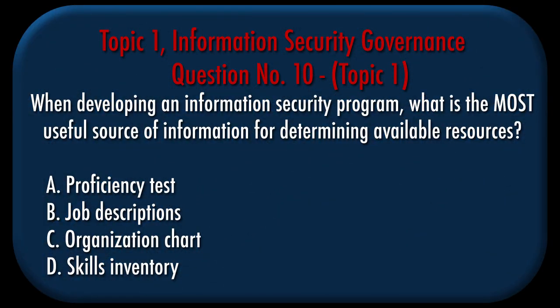Question number 10, Topic 1: When developing an information security program, what is the most useful source of information for determining available resources? A. Proficiency test. B. Job descriptions. C. Organization chart. D. Skills inventory.